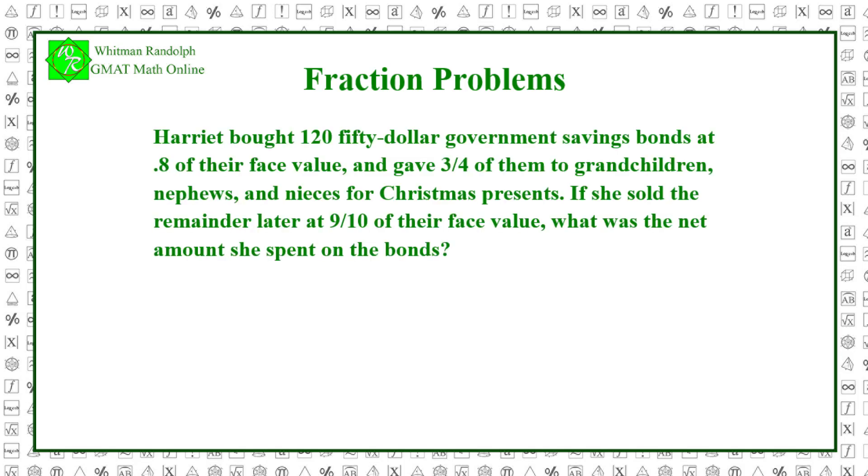Harriet bought 120 $50 government savings bonds at eight-tenths of their face value and gave three-quarters of them to grandchildren, nephews, and nieces for Christmas presents. If she sold the remainder later at nine-tenths of their face value, what was the net amount she spent on the bonds?